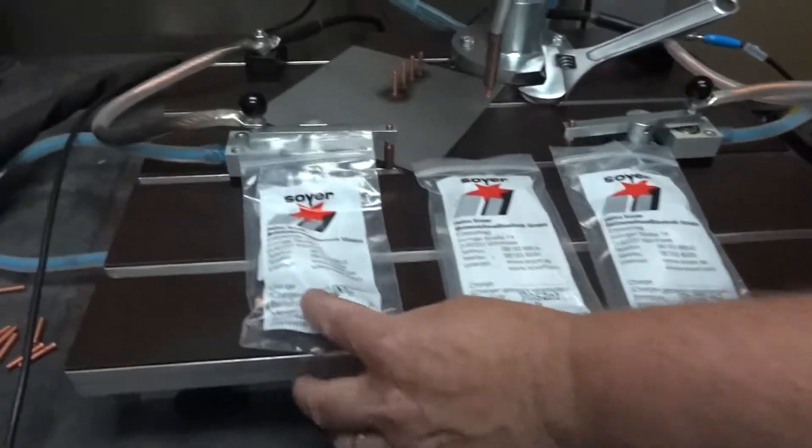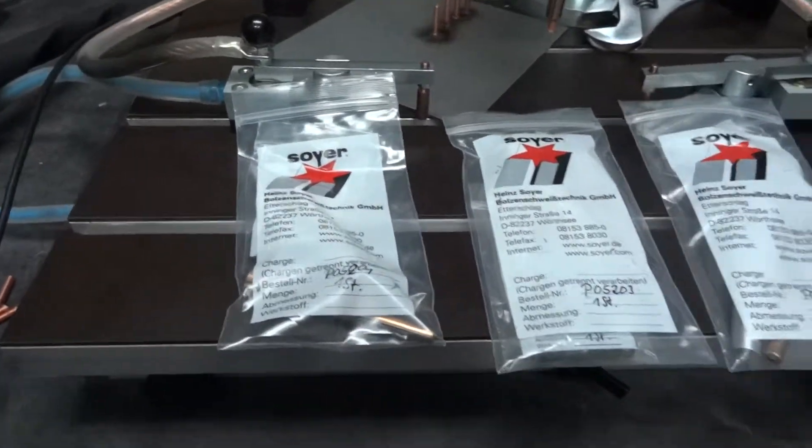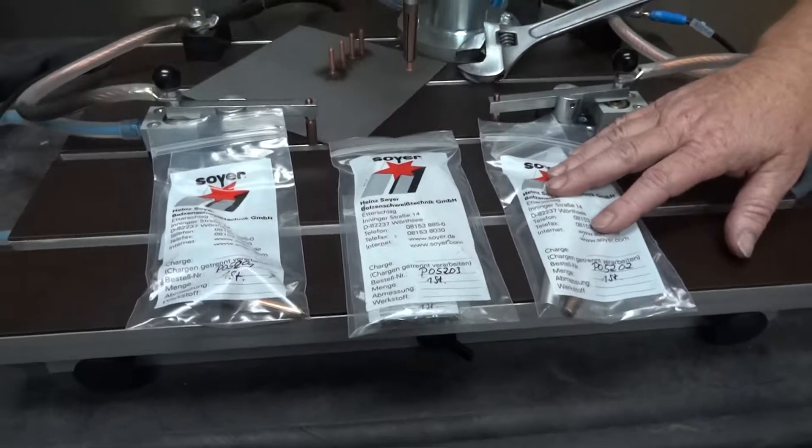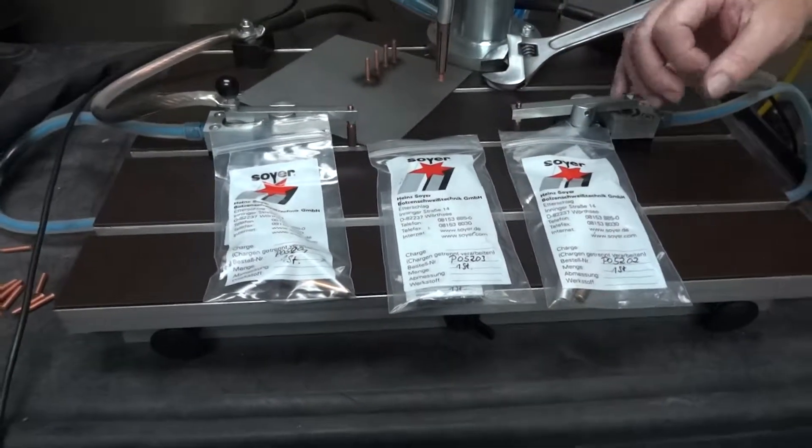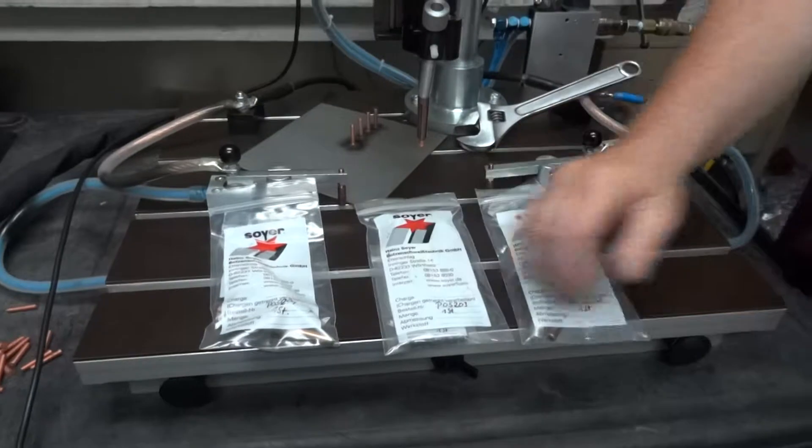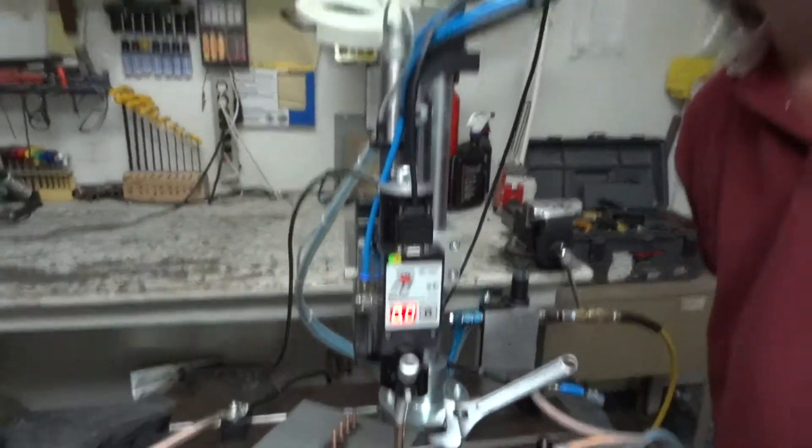So we have like M3, M4, and M5. So whenever you're going to change from one diameter to another, you have to install a different kit. So that's basically this part of the setup. And I'll do another video here on how to set the head up.